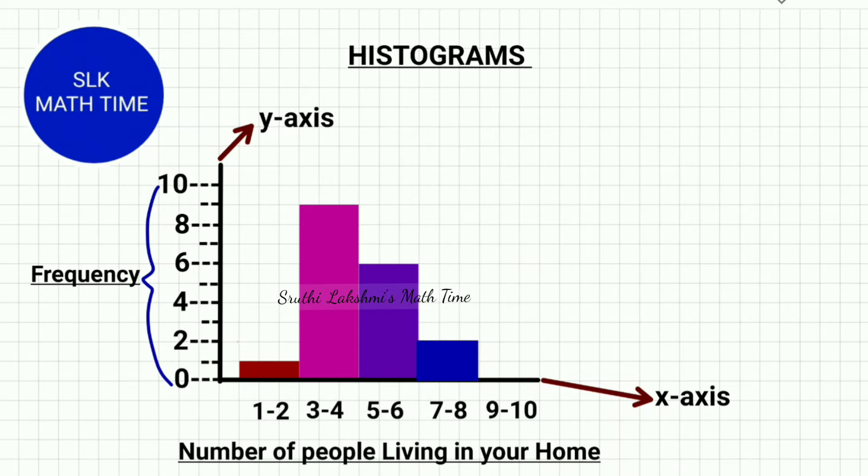Histograms are just like bar graphs. But a histogram doesn't have spaces between the bars. So these are the bars. As you see, there are no spaces between the bars.